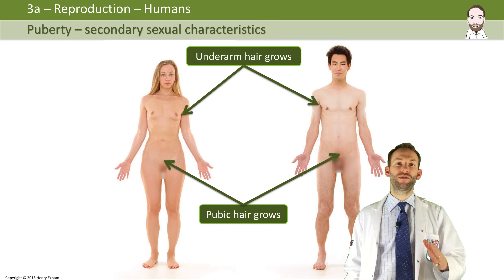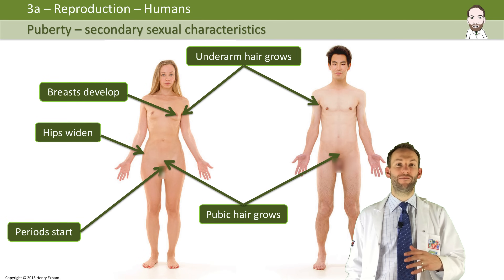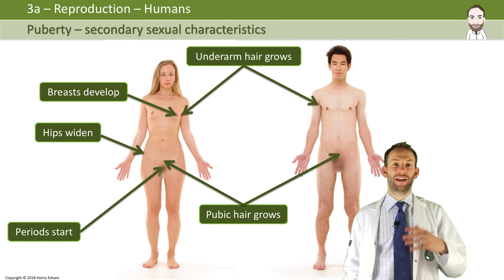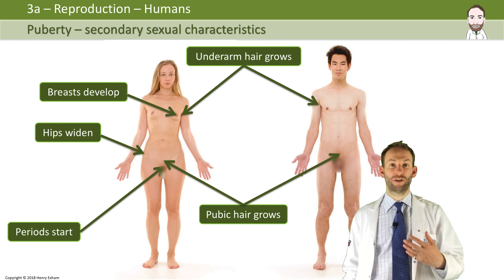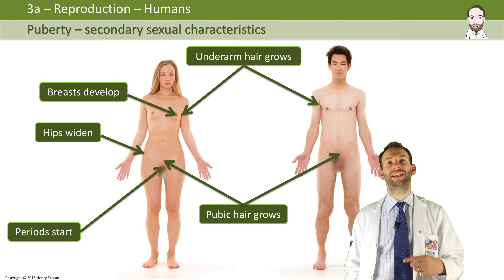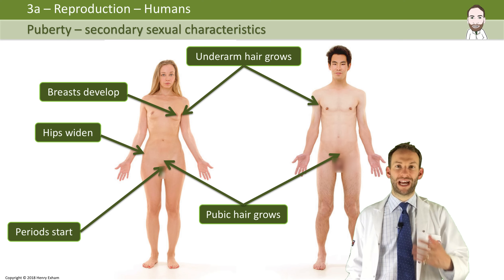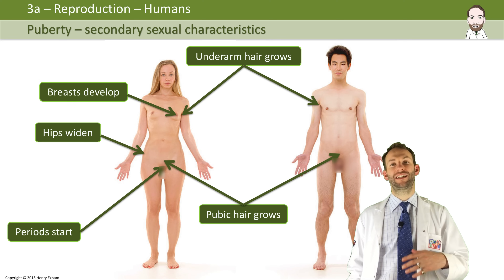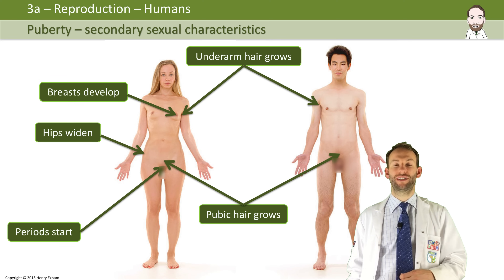In females, the breasts will develop ready for feeding a baby, the hips will widen ready for childbirth, and most importantly the menstrual cycle will begin — the monthly cycle of periods where eggs are released in order to be able to get pregnant. That will start at puberty.